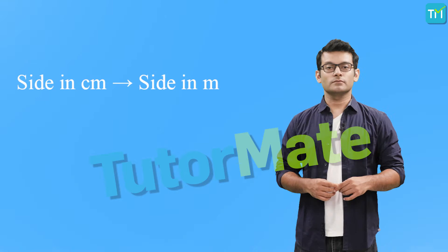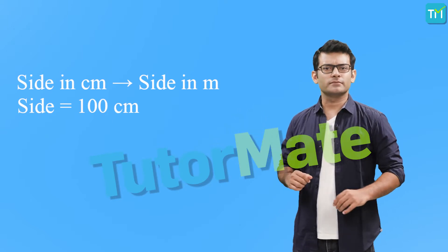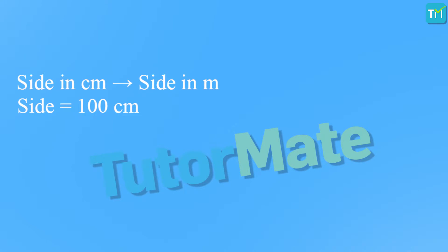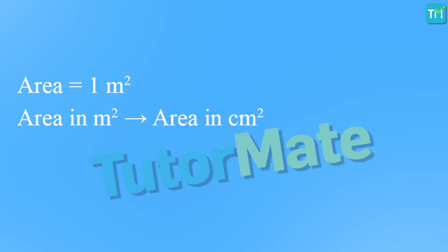Let us say the length is in centimeters. Take a square whose side is 100 centimeters, and we need to find its area in meters. All we need to do is convert the length into meters first. Since 1 meter equals 100 centimeters, the side becomes 1 meter. That was simple, wasn't it?